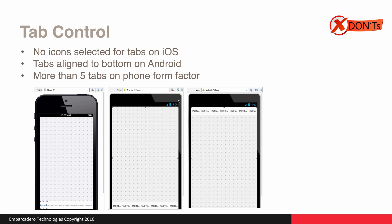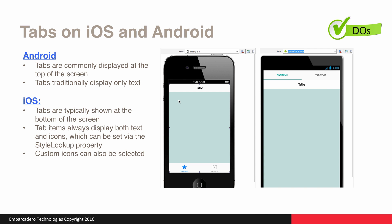Some don'ts for using the tab control: no icon selected for tabs on iOS — it's really important that tabs on iOS use iconography. On Android, tabs should never be aligned to the bottom; the default alignment is at the top. You shouldn't have more than five tabs on the phone form factor. Tabs are commonly displayed at the top of the screen on Android and traditionally displayed only with text. With the T-Tab control in RAD Studio, behavior services support in FireMonkey allows it to automatically display as a top-aligned tab on Android and a bottom-aligned tab on iOS by default, which can be overridden. On iOS, tabs are shown at the bottom and should show both text and icons, which can be set via the StyleLookup property.